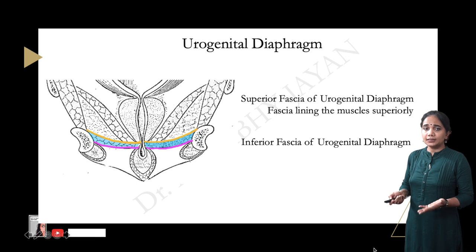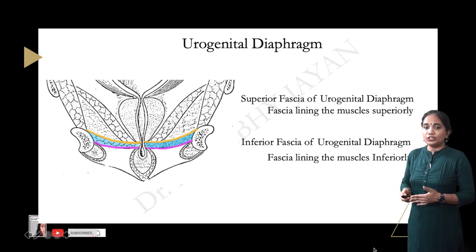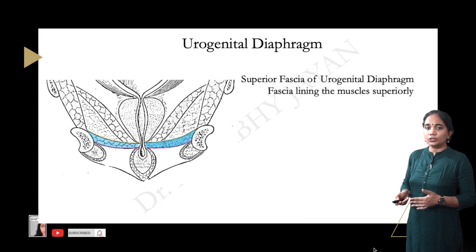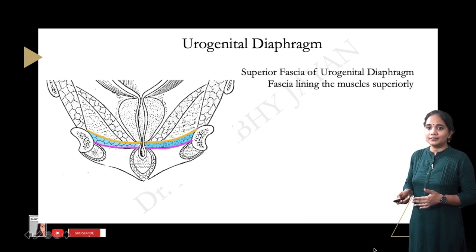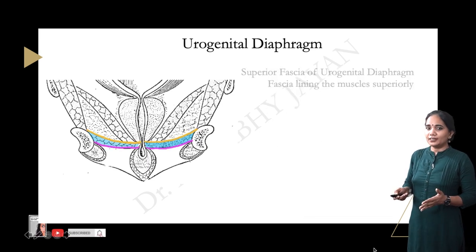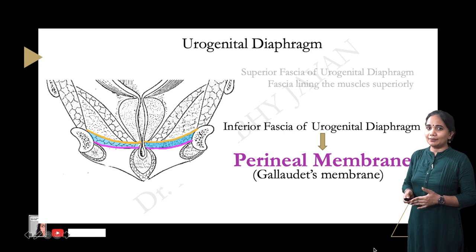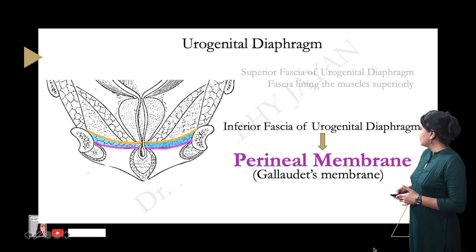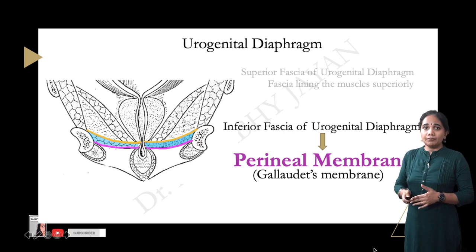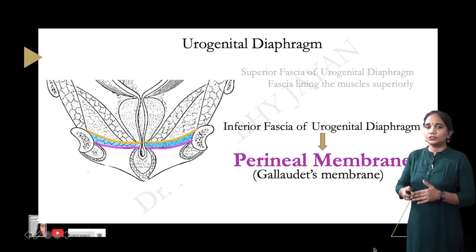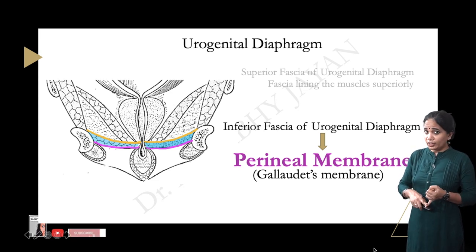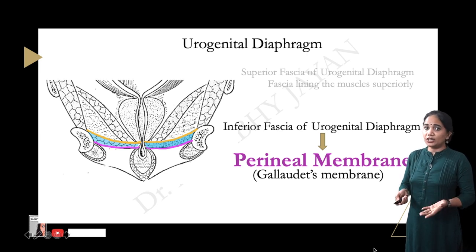This is where it gets interesting: the inferior fascia of the urogenital diaphragm is what is called the perineal membrane. For examination purposes, the perineal membrane is also called Gallaudet's membrane. So now we know what Colles' fascia, Colles' membrane, and the perineal membrane are.